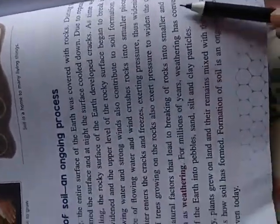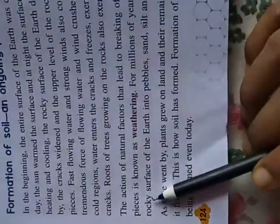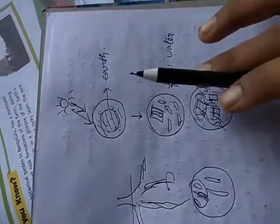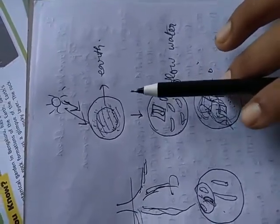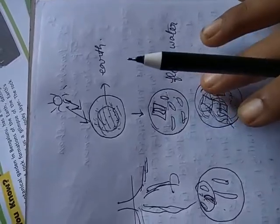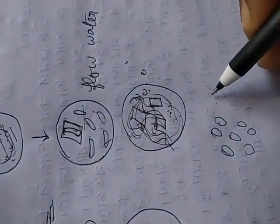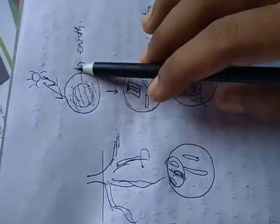For millions of years, weathering has converted the rocky surface of the earth into pebbles, sand, silt and clay particles. These factors convert the rocky surface into small pieces and ultimately form pebbles — comparatively larger — sand, which are smooth particles, silt and clay particles. These all are the elements of the soil, formed due to the action of these natural factors: sunlight, water flow, wind, and sometimes the roots of plants.